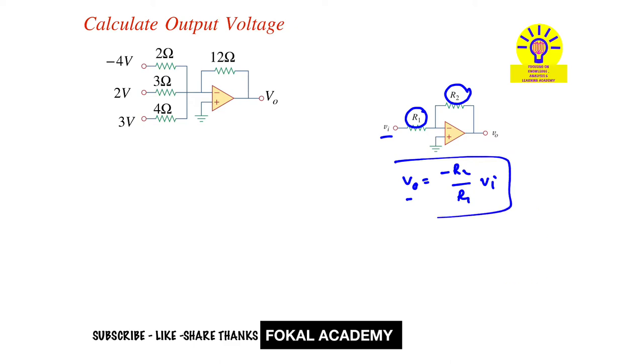So here by using this we will get each contribution by each source, and it is a summing amplifier. So here output voltage is equal to V1 plus V2 plus V3. So V1 is the voltage contributed by minus 4 volts, V2 is the voltage contributed by 2 volts source, and V3 is the voltage contributed by 3 volts source.